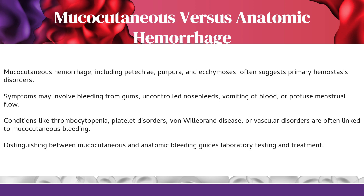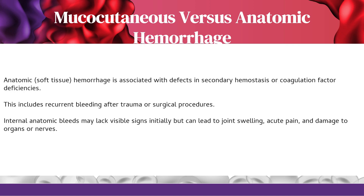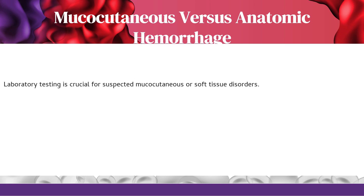Distinguishing between mucocutaneous and anatomic bleeding guides laboratory testing and treatment. Anatomic soft tissue hemorrhage is associated with defects in secondary hemostasis or coagulation factor deficiencies. This includes recurrent bleeding after trauma or surgical procedures. Internal anatomic bleeds may lack visible signs initially but can lead to joint swelling, acute pain, and damage to organs or nerves.